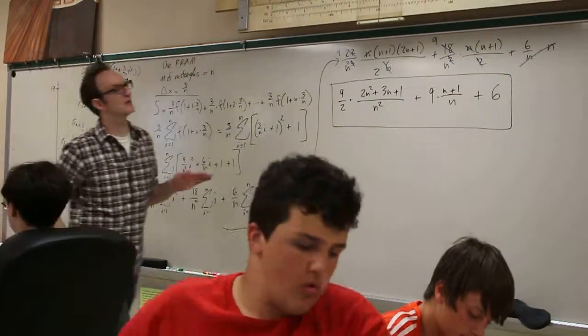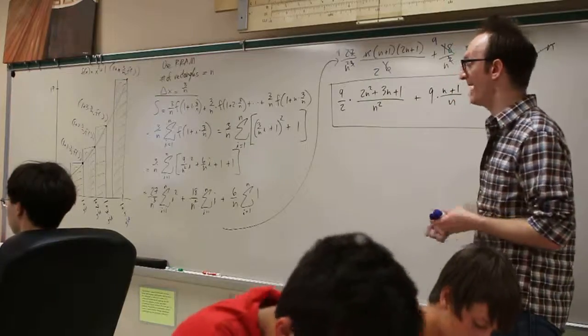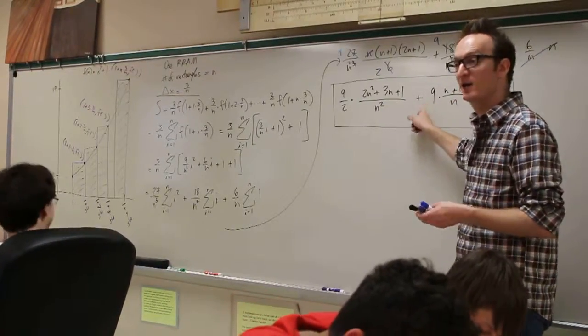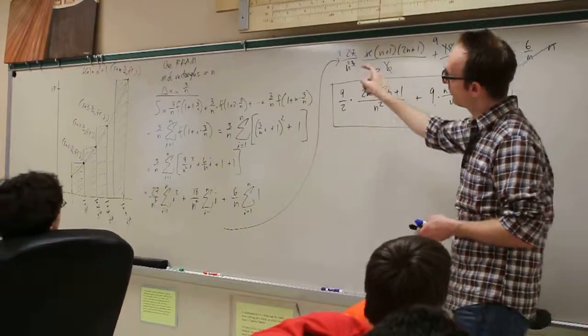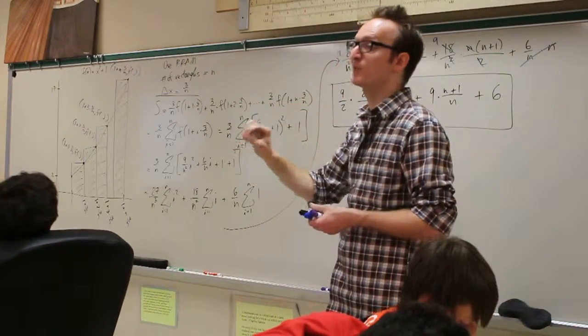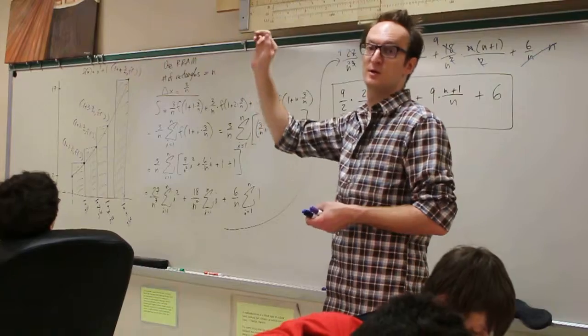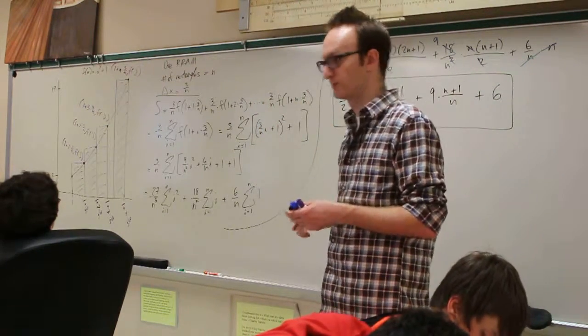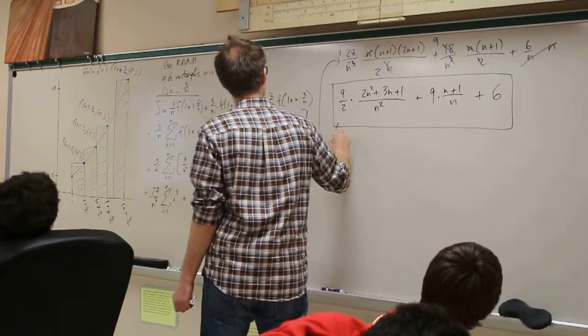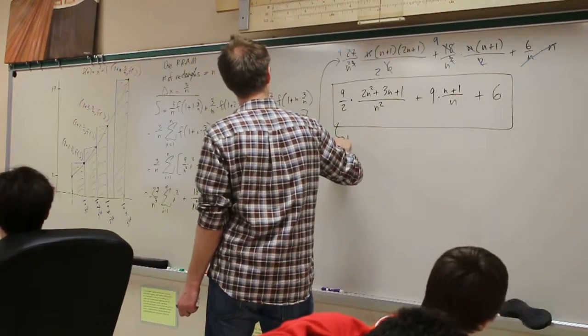Yeah, but even before I do anything like that, I can still give some meaning to this, right? Here's what this expression is. This expression is the area under this curve as approximated using rRAM, with exactly n rectangles. So, this is the rRAM, this is the right approximation.